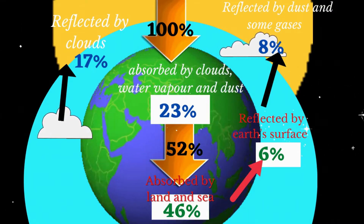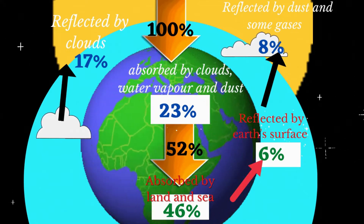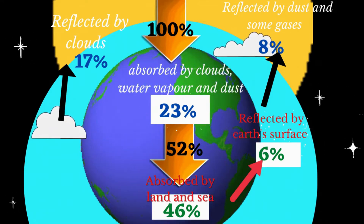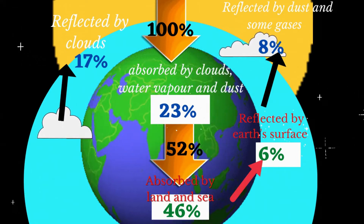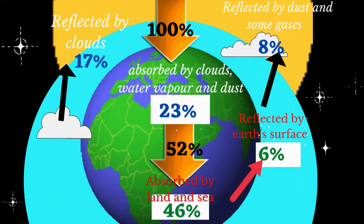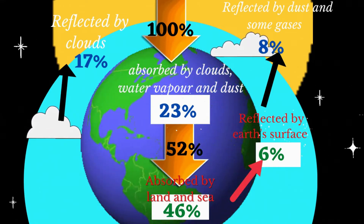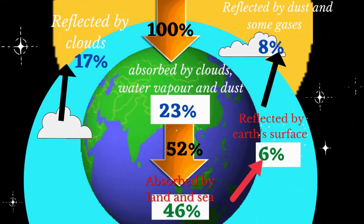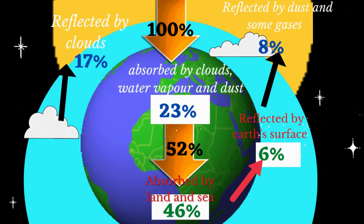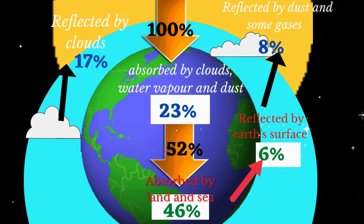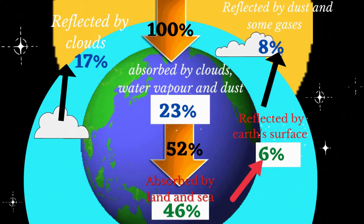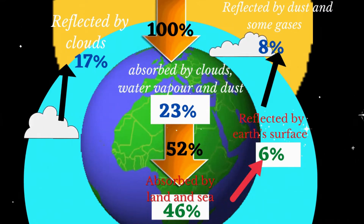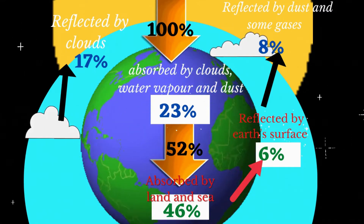The diagram shows that not all of the insolation actually reaches the earth's surface. As solar radiation penetrates the atmosphere, some of it is absorbed, some is reflected, and some is scattered.